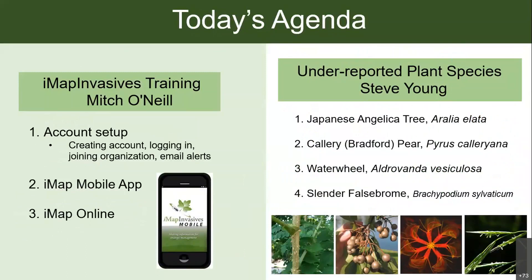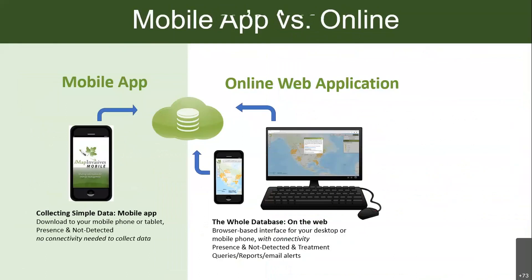For today's agenda: first I'll give an IMAP Invasives training — by the end of this webinar anyone interested should be able to log into their IMAP Invasives account and report a record on the mobile app. The second part will be a training on some key under-reported plant species from our chief botanist Steve Young. For example, the third picture is water meal — it poses a huge threat but is also a fascinating plant to learn about.